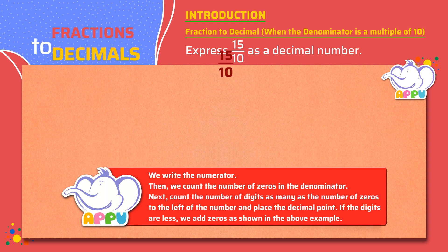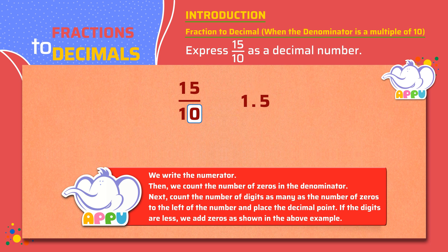We write the numerator — that is 15. We count the number of zeros in the denominator — that is we have one zero. Now we count one digit to the left of the number and place the decimal point, that is before 5. So the answer is 1.5.